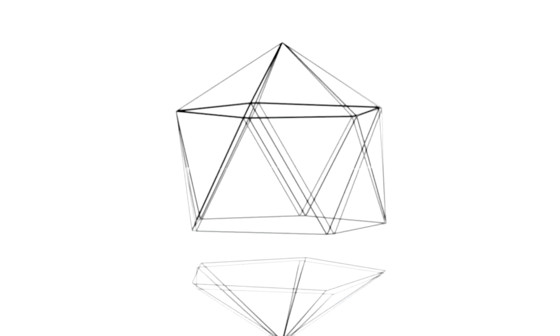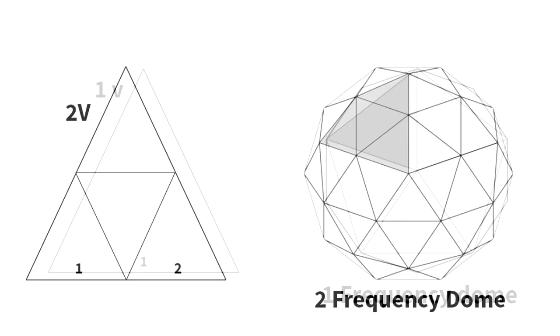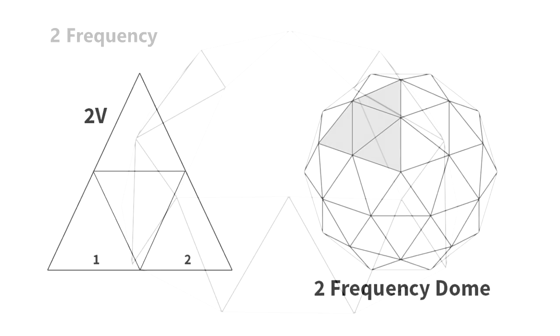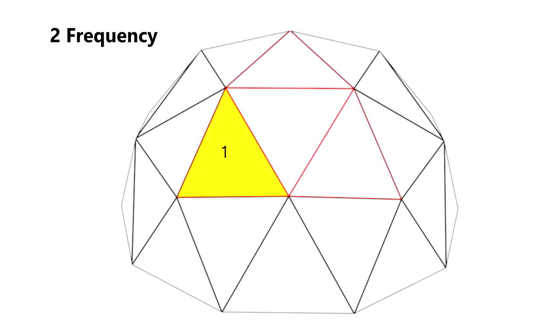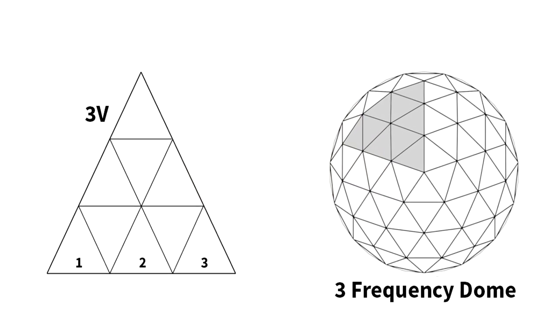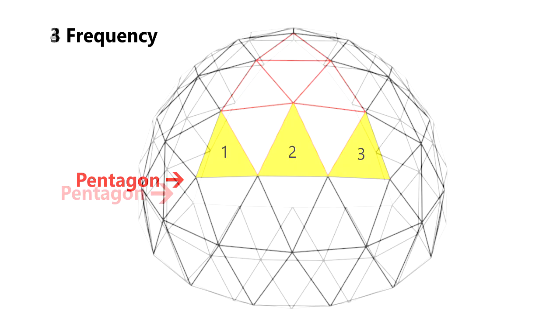He truncated the icosahedron to make a dome. By dividing each side of each triangle by two, he created a two frequency dome. Dividing it by three creates a three frequency dome, and so on.